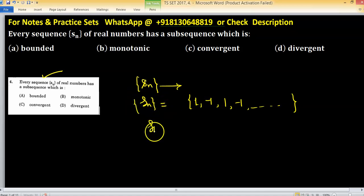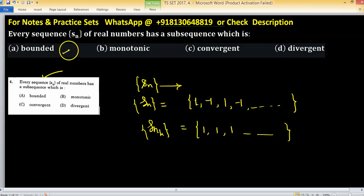And you can take Snk, this is the subsequence of 1, 1, 1, means you are taking only the positive ones. So this sequence is bounded and convergent. So option A becomes true, option C is also true.